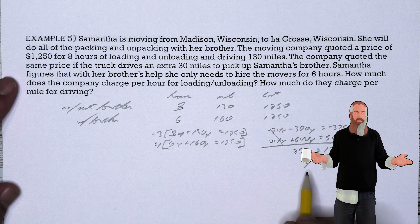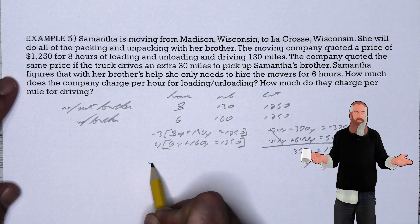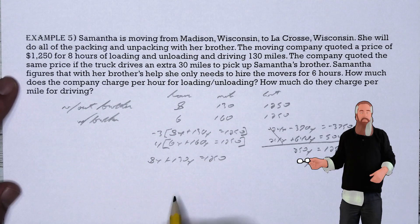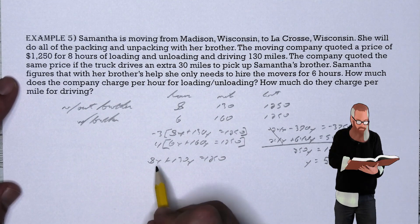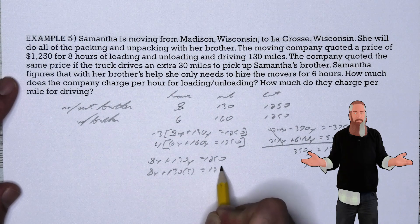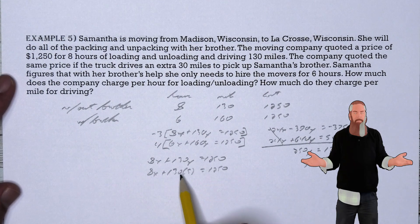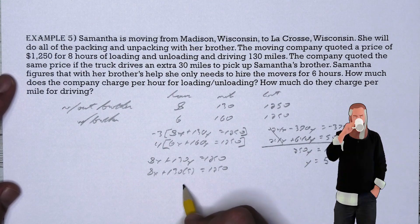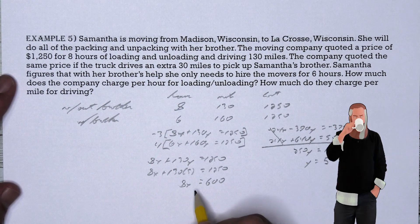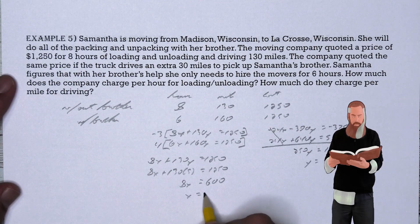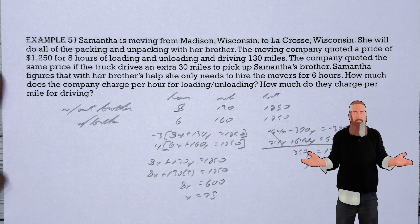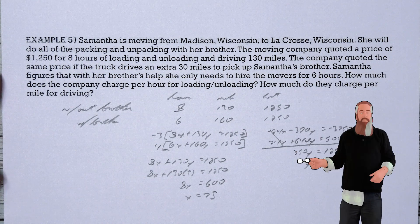Knowing y = 5, we substitute into the first equation: 8x + 130(5) = 1,250. Since 130 × 5 = 650, subtracting 650 from both sides gives 8x = 600. Dividing both sides by 8 gives x = 75. Samantha will pay $75 per hour for loading and unloading and $5 per mile for the truck rental.